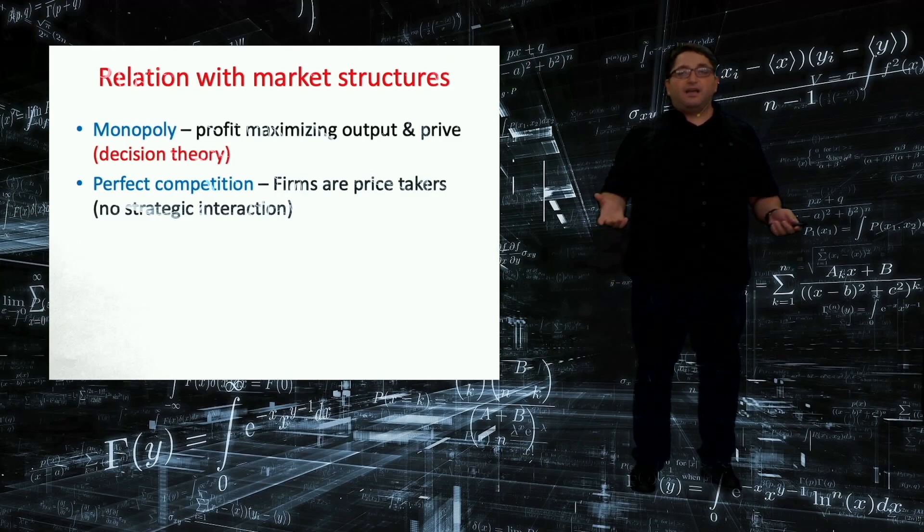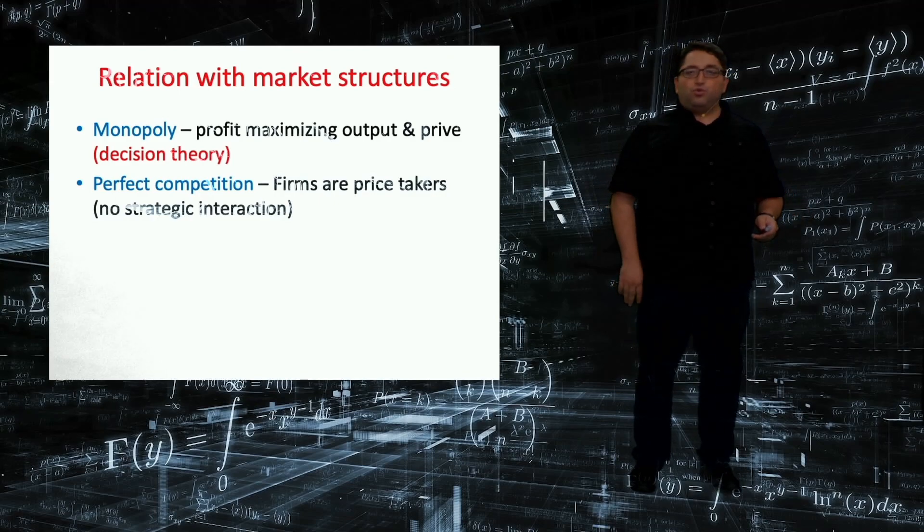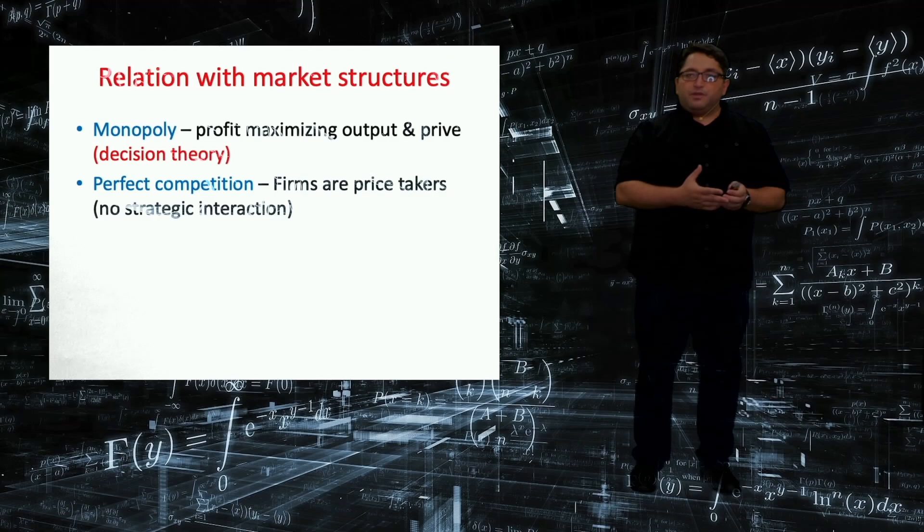In particular, two sellers—oligopoly. And game theory works the best if you make it even more compact, like only two firms, which is called duopoly. So in this lecture, most of my examples will include two consumers, two individuals, two firms, and so on.